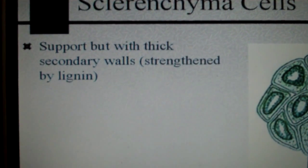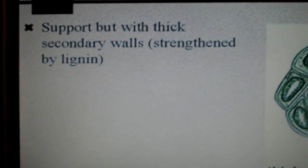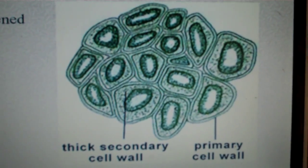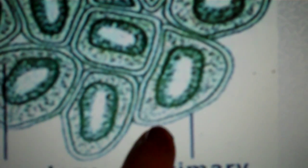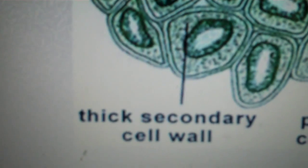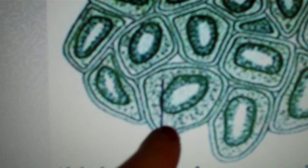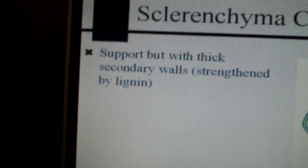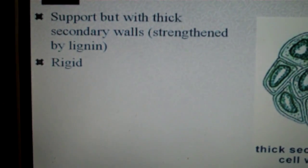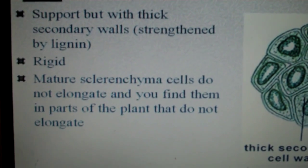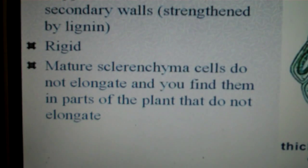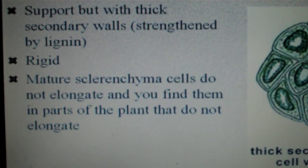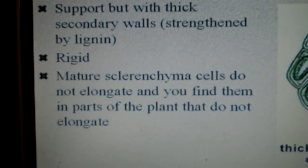Then last, we have the sclerenchyma cells. These are for support, but with thick secondary walls — so these have the lignin. You can see a picture here: the primary cell wall is the part on the outside. In plants, a primary cell wall is the outer cell wall, and then a secondary cell wall is located here, in this more fuzzy green area. They're rigid, which means firm. Mature sclerenchyma cells do not elongate, so you're not going to find them in parts of the plant that are increasing in primary growth, but you do find them in parts that do not elongate — like the bark of a tree.